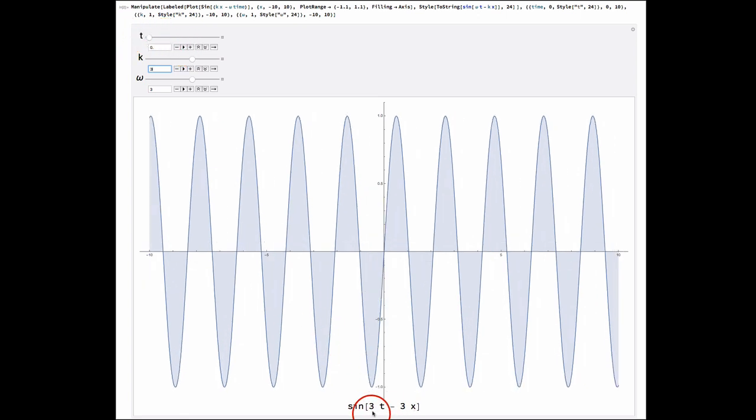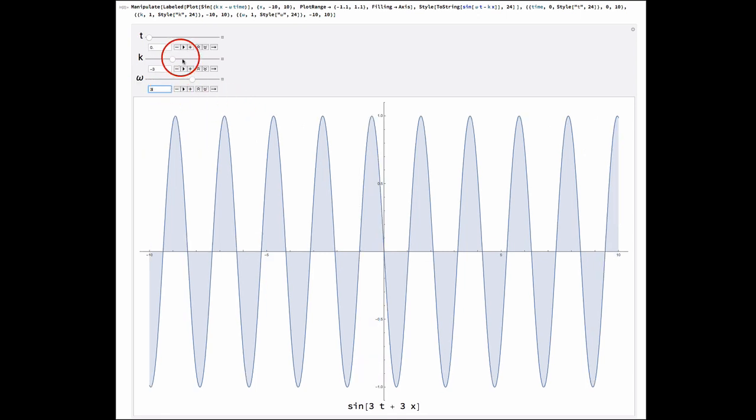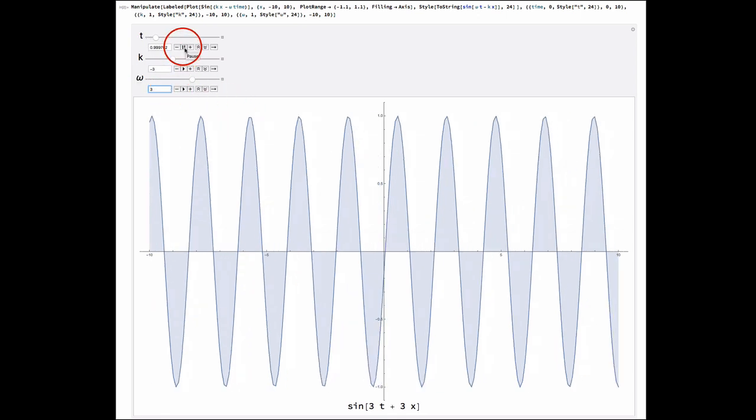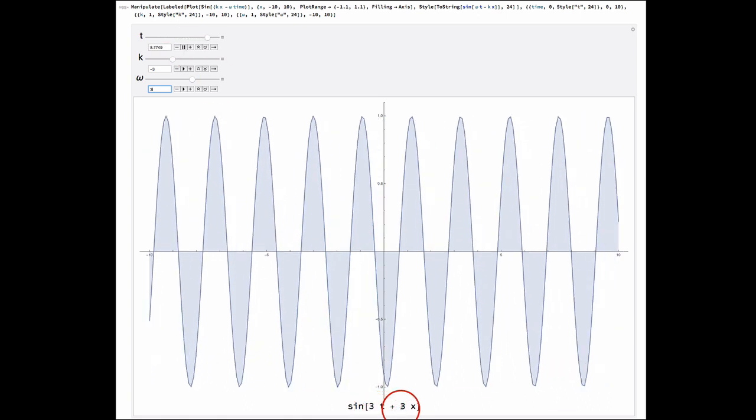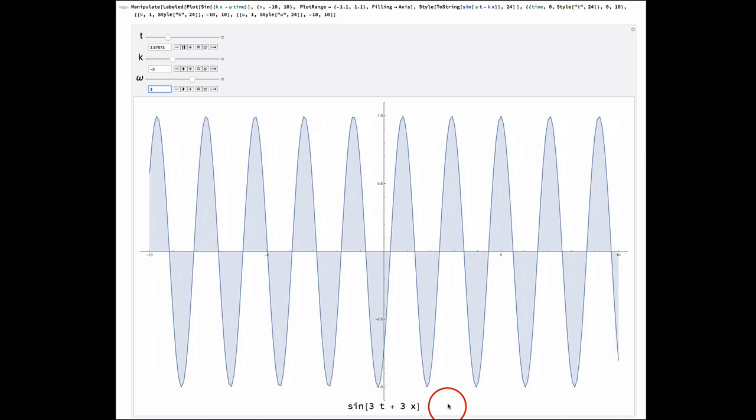Now, at the moment the argument of the sine function is omega t minus kx. If we change the sign of k, so let's make k equal to minus 3 like this, then what we find is that our wave starts to run backwards. So now we have omega t plus kx and our wave goes backwards.